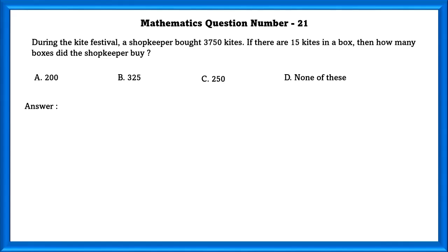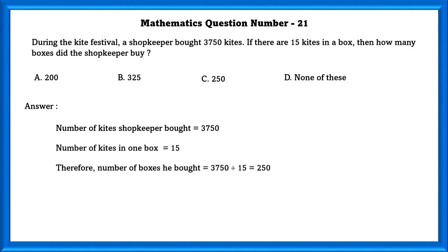Mathematics question number 21. During the kite festival, a shopkeeper bought 3,750 kites. If there are 15 kites in a box, then how many boxes did the shopkeeper buy? In order to find how many boxes the shopkeeper bought, total kites divided by number of kites in one box, which is equal to 250.